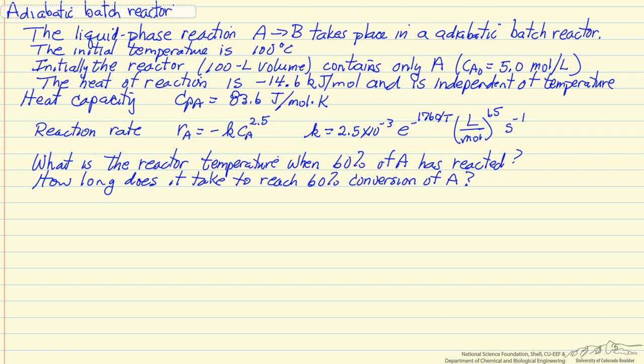In this screencast I'm going to solve the mass and energy balance for an adiabatic batch reactor. It's a liquid phase reaction, we're given the initial temperature is 100 degrees C, the initial and of course constant volume. We start out with just A in the reactor.